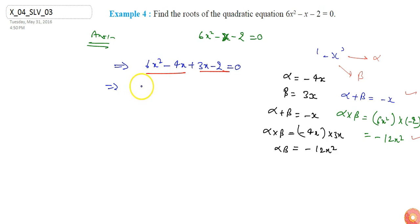So from here we can see that from here I can take 2x common so it will be 3x minus 2. And from here if I take one common it will be 3x minus 2 equals to 0. Or I can say it will be 2x plus 1 and 3x minus 2 equals to 0.